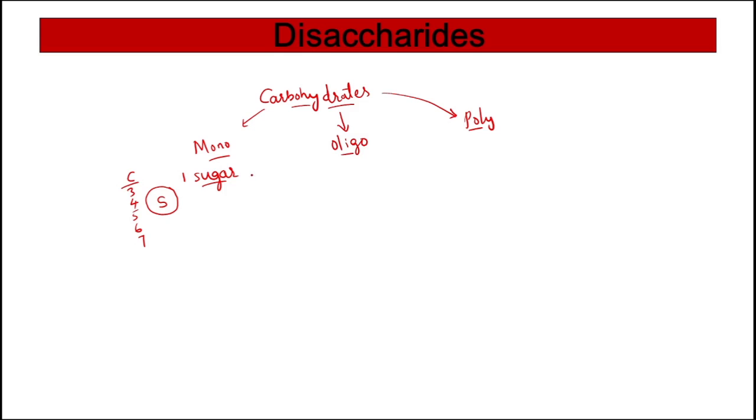The very most common and major important monosaccharides are first one glucose, then galactose, and we have fructose.